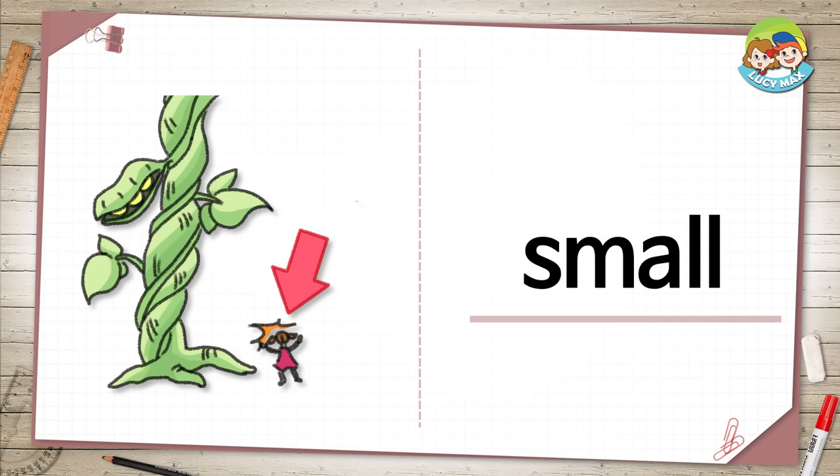Small. The arrow is pointing to a small girl. The plant is big. Are you small or big?